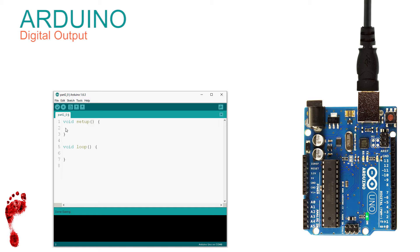As this is a demonstration of digital output, we need to instruct the Arduino to set pin 13 as an output: pinMode(13, OUTPUT). We could almost read this as plain English. It's important to note that the M in pinMode has to be capital — this form of typing is called camel case. In the parentheses we have 13, the pin number, and OUTPUT in all capitals. Notice the editor changes the color of our special words, confirming it understands what we are typing.